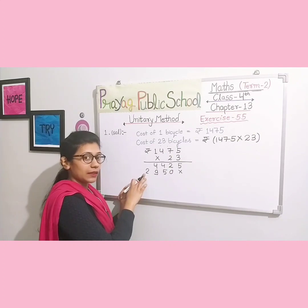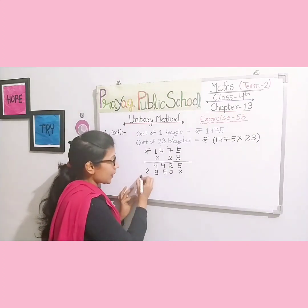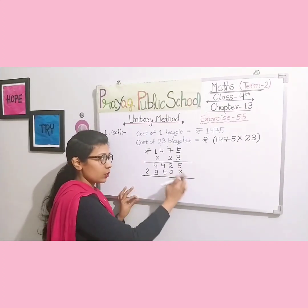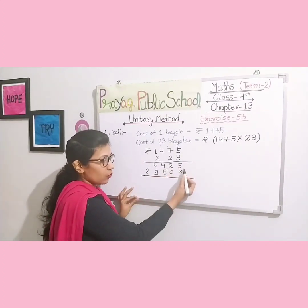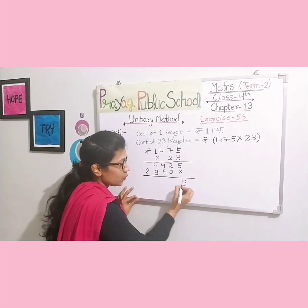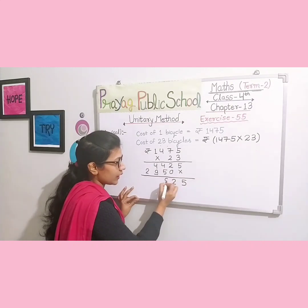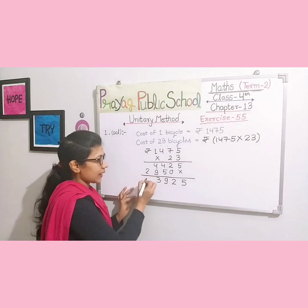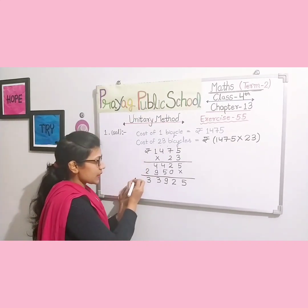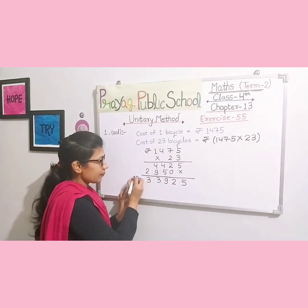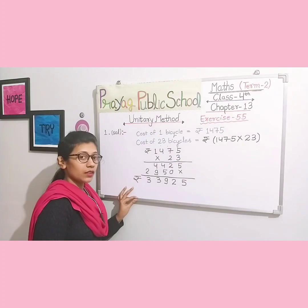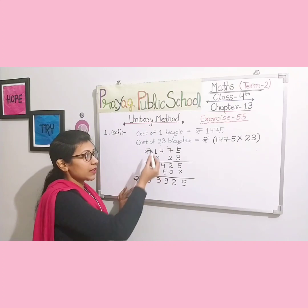Complete the multiplication: 1475 × 3 gives the first partial product, and 1475 × 20 gives the second. Then do the addition of both partial products. 5 + 0 = 5, 2 + 0 = 2, 4 + 5 = 9, 4 + 9 = 13 (write 3, carry 1), 2 + carry 1 = 3. The final answer is rupees 33,925. Last statement: the cost of 23 bicycles is rupees 33,925.